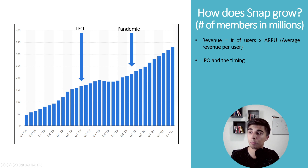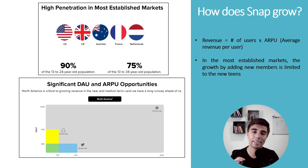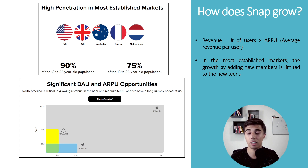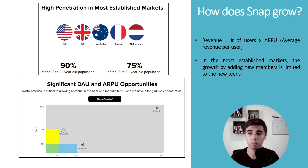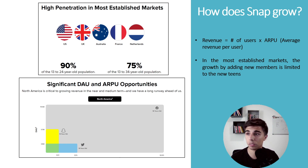Speaking of the limit, if we take a look at their most established markets — US, UK, Australia, France, the Netherlands — 90% of the population between 13 and 24 years old are already on the platform. That's a huge percentage, and the question is where new users are going to come from in these areas. They cannot really grow significantly; they need to wait for new children to become teenagers and join the platform.